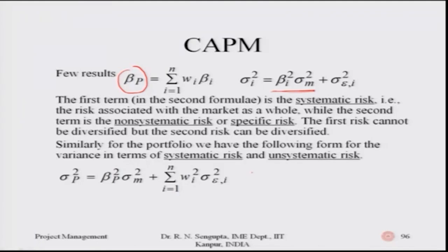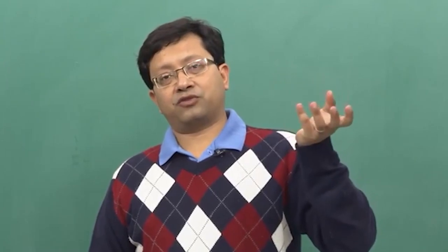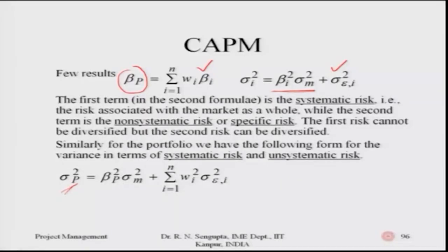Similarly, for the portfolio, there are two types of risk extending from the first and second formulas. The overall risk of the portfolio — the conglomeration of assets or projects — is the multiplication of the market risk by the square of the portfolio beta, plus the non-systematic or white noise risk for each asset multiplied by the square of the total quantum of investment for that particular project.